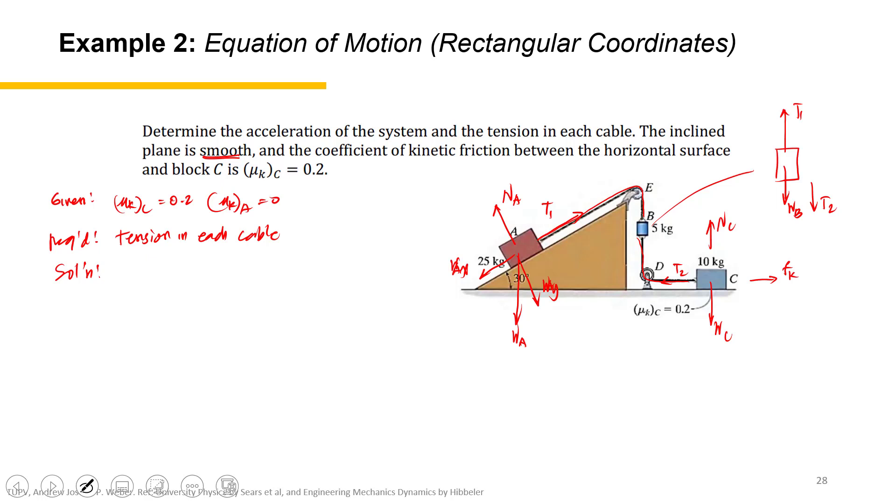So for A, we're now ready to formulate the equation of motion for each of the objects. Let's start with A. So let's assume first that the motion is in this direction. Because there is no other way that block C would move in that direction. There is no other force, because F_K is just a resistance force. It is not an action force.